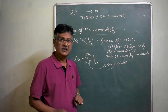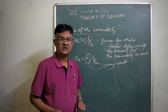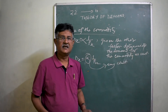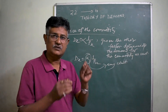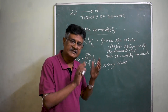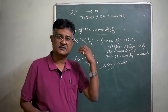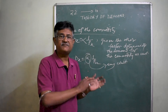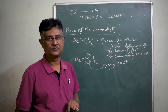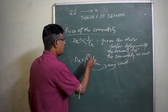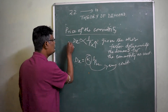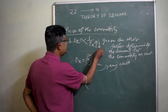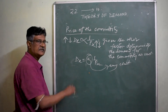If we assume the factors other than the price of the commodity — that is the price of related goods, the income of the household, the taste and preferences of the people, the size and composition of population — if these factors are held constant, then higher the price, lower will be the quantity demanded, and lower the price, higher will be the quantity demanded.